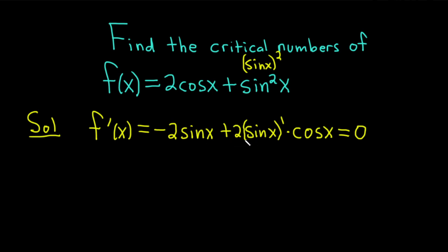It looks like we can factor out some stuff here. We can pull out a negative 2 sine x. This is negative 2 sine x parentheses. Let's see what goes here. What do you multiply by negative 2 sine x in order to get negative 2 sine x? Well, just 1. And then what do you multiply by negative 2 sine x in order to get all of this? 2 sine x cosine x.